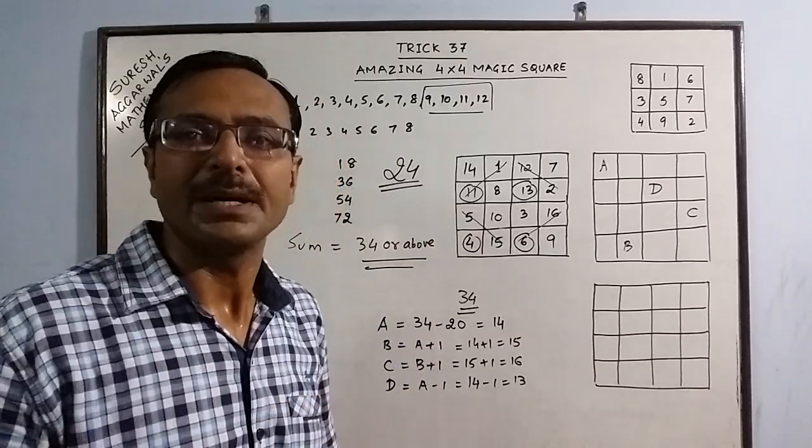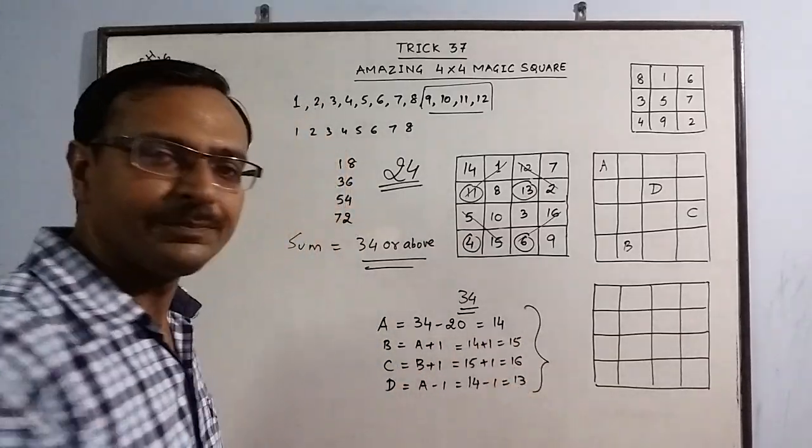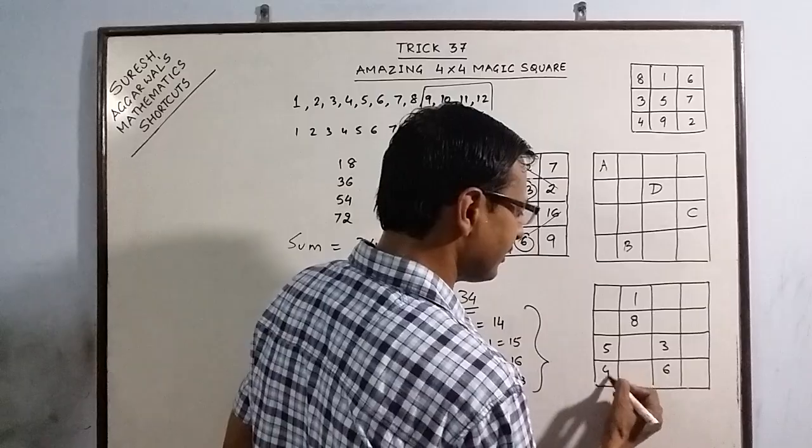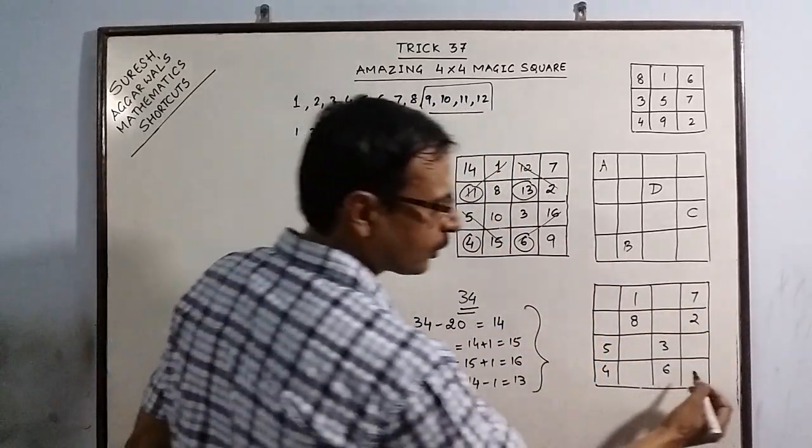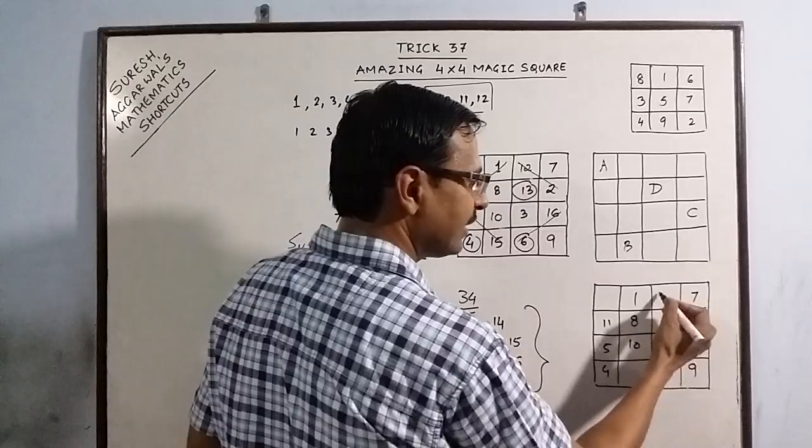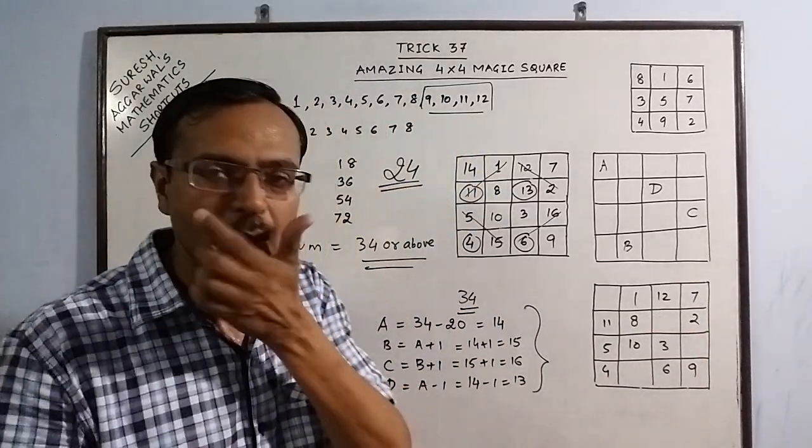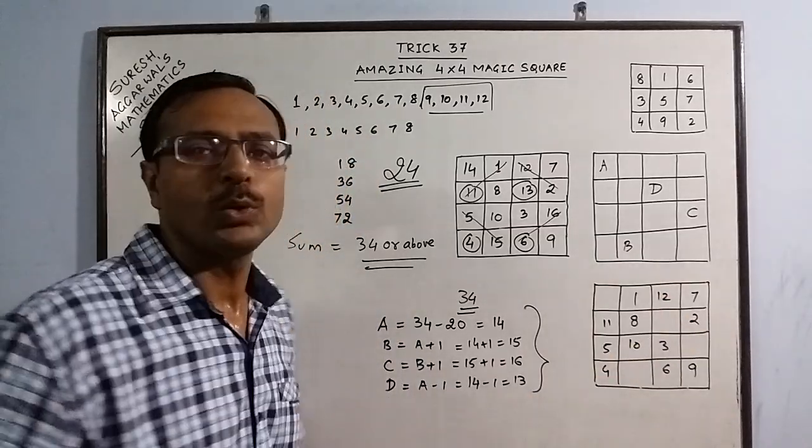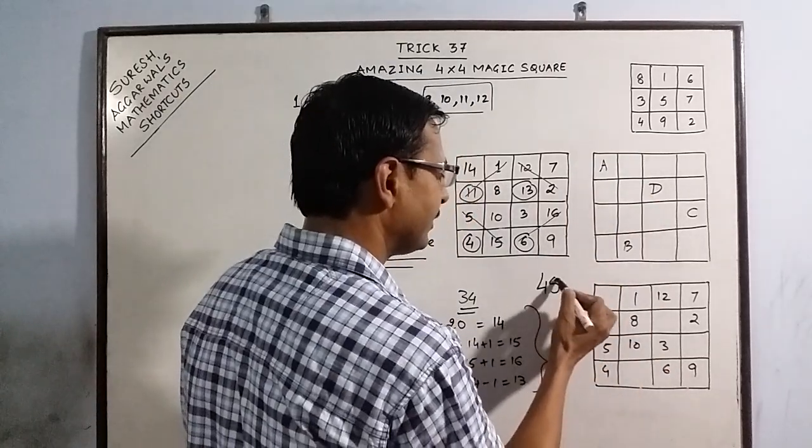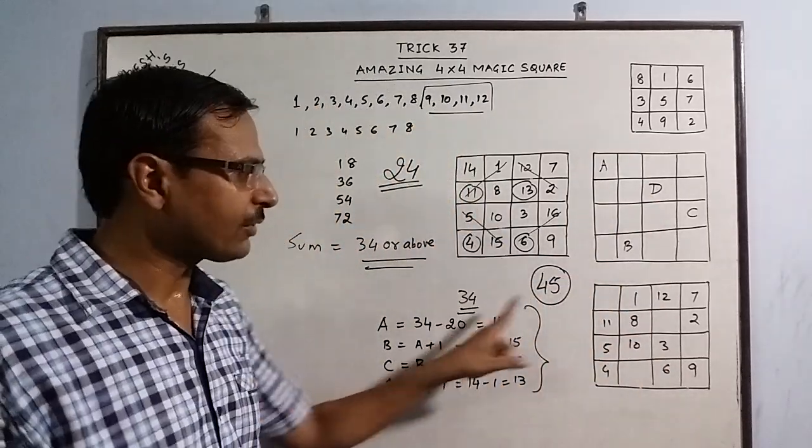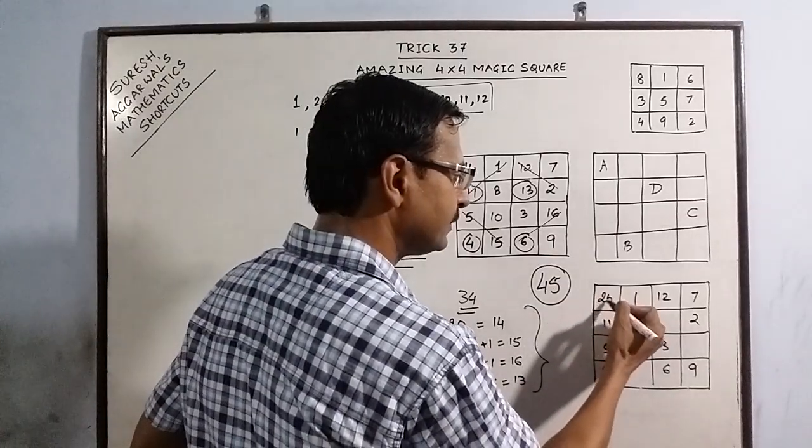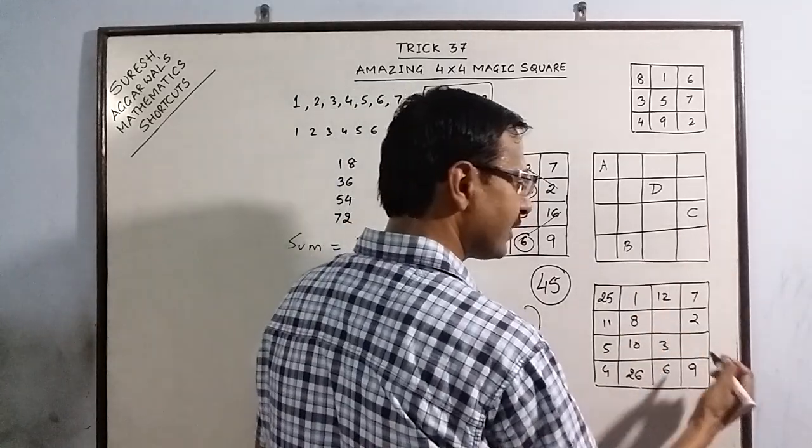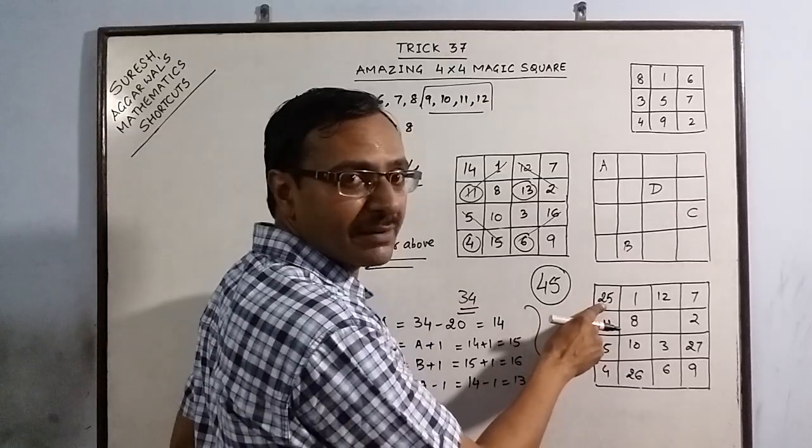Similarly, you can have a sum of some other also. Say, this is the way you write. Suppose, I take a different example now. I am writing the same thing now. 18, 36, 54 and 72. First 8 numbers. Then 9 occupies the corner place. 10, 11, 12 is zigzag. And now, I need a different sum. You can ask your friend to tell you a sum. Whatever sum he says, you can bring out that magic square. So, now, he tells you to bring out a magic square in which the sum of the numbers is 45. Now, what you do is subtract 20 from 45. You get 25. So, write 25 here. Increase it by 1. In place of B, write 26. In place of C, increase it further by 1, 27. And then 25 minus 1 gives you 24. So, last cell will be 24.